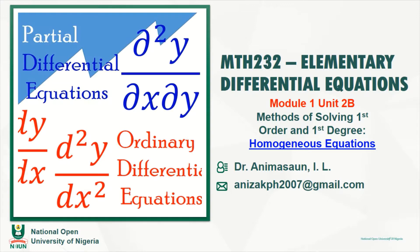We use this method especially when we notice that we cannot easily separate the variables in our function f(x, y). Then we look at whether, if we substitute y equals v of x inside f(x, y), we would be able to remove the independent variable x. If we can do that, then we proceed with this method.